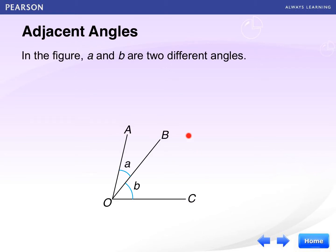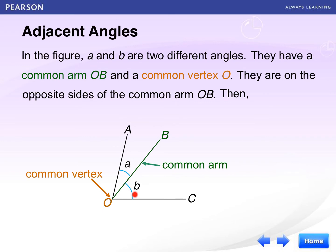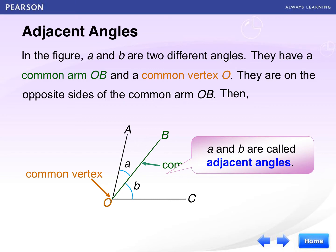In this figure, A and B are two different angles. These two angles have a common arm, OB, and a common vertex, O. Then angle A and B are called adjacent angles.